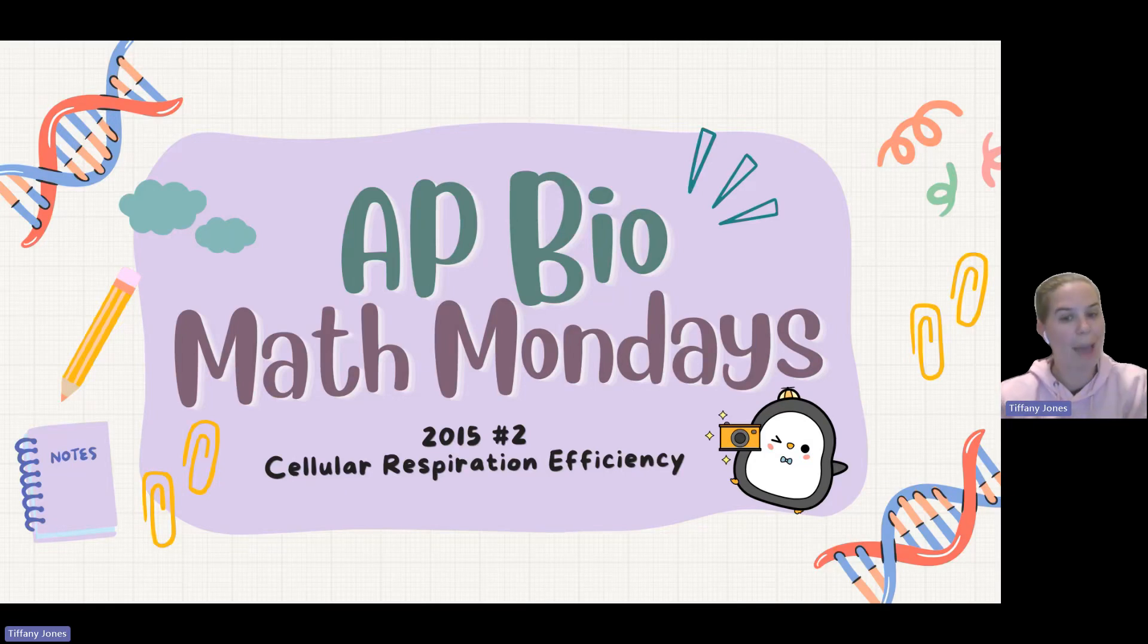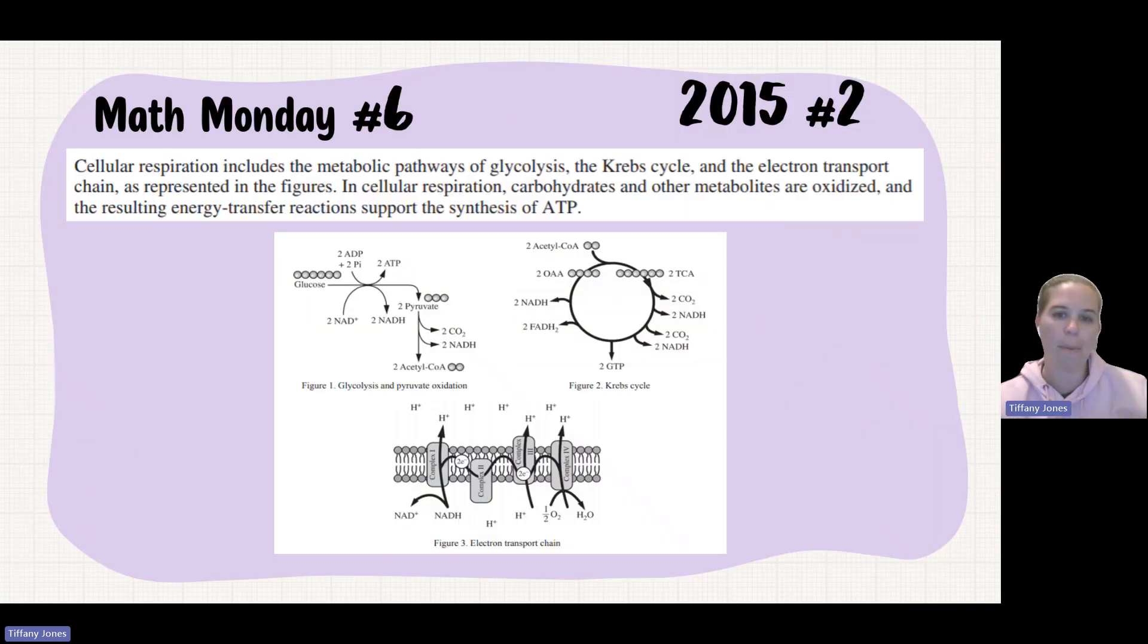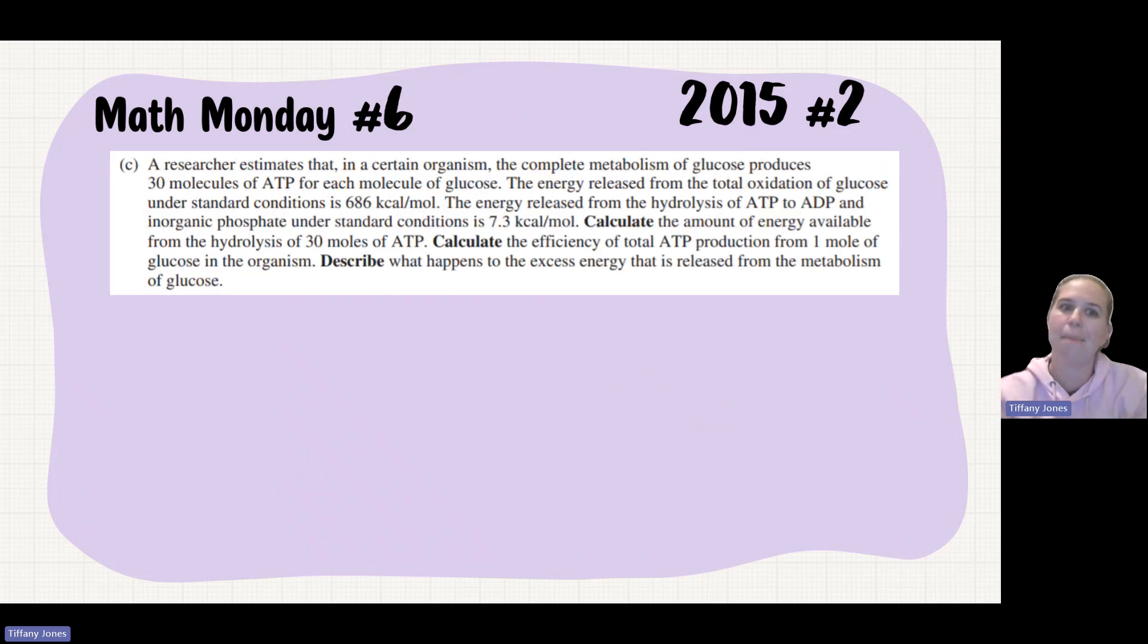Today we're going to do something a little different. We're going to do some of the math that's in one of the FRQs. So 2015, number two, this was on cellular respiration efficiency. They started out with the question to talk about glycolysis, Krebs cycle, and electron transport chain to give you a little bit of background on cellular respiration. And then in part C, we see the math.